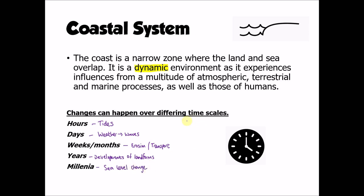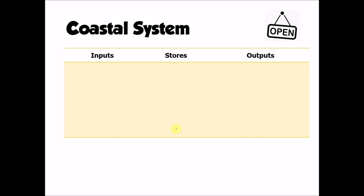The coast is changing constantly on timescales from just a few hours up to millions of years when we consider changes in sea level. We can think about the coast as a system, just like we've looked at water and carbon cycles as a system. Coasts are an open system, meaning they have inputs and outputs of both energy and matter.